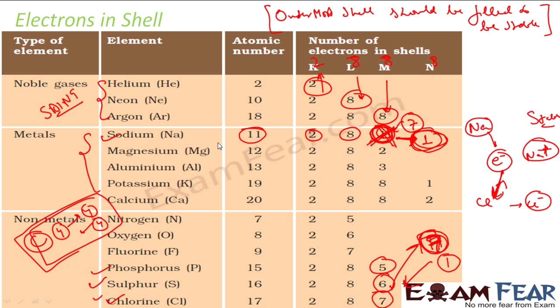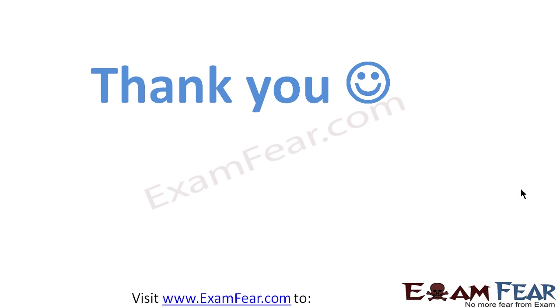Hope you understand this part — why sodium is ready to give an electron and chlorine is ready to take an electron. Thank you.